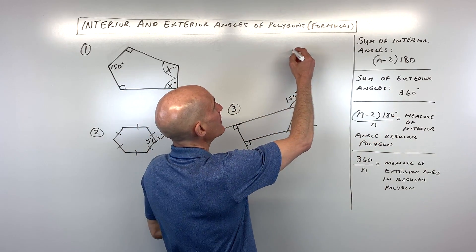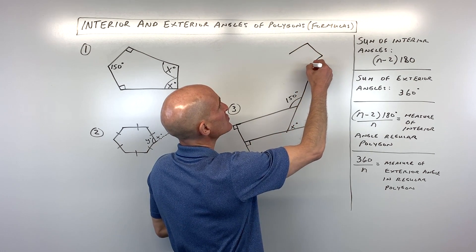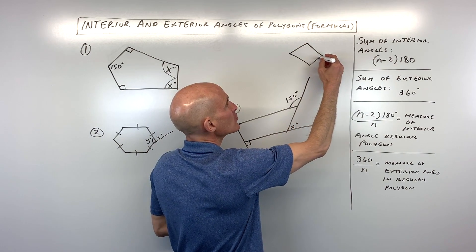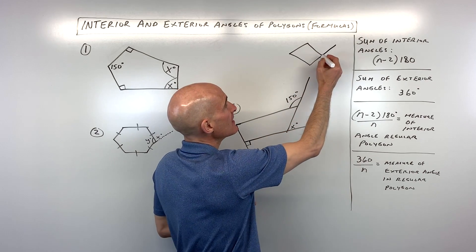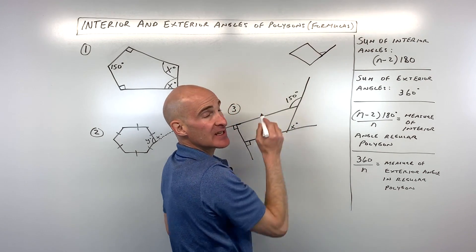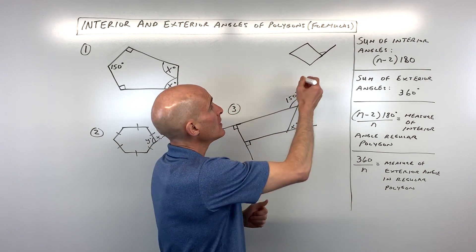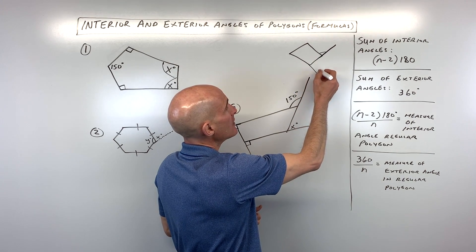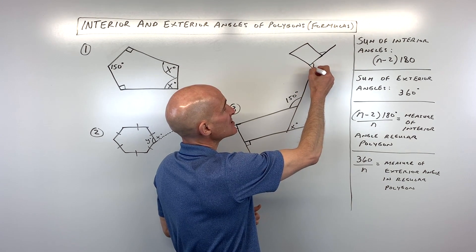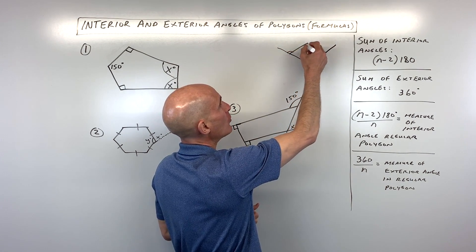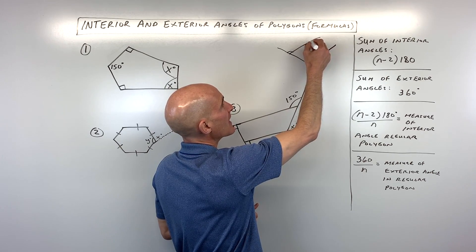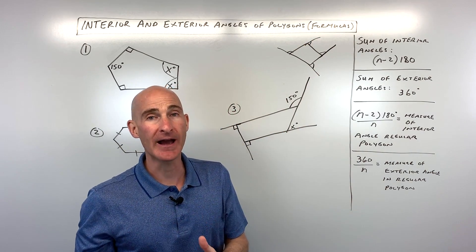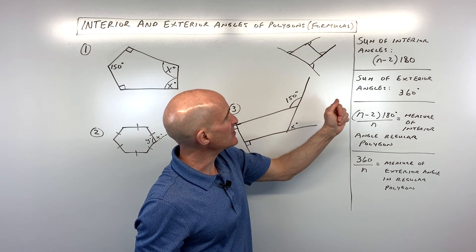When you look at a polygon, at each vertex, if you extend one of the sides, that angle there is an exterior angle. Same thing here — if you extend either this side or this side, that's an exterior angle. So you have one exterior angle at each vertex, or at each corner, of the polygon, and all those angles add up to 360.